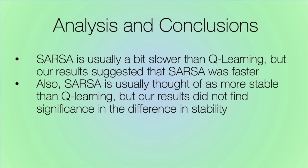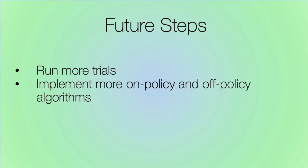It is known that Sarsa is usually a bit slower than DeepQ Learning, but our results seem to suggest that Sarsa is actually a bit faster. We believe this may be because Sarsa can more accurately estimate the actual value of the agent's actions, given that the agent would like to explore once in a while — a greedy estimation may be too optimistic. It is also usually the case that Sarsa is more stable than DeepQ Learning, but we did not find significance in our stability data. To verify this, we would need to run more trials. In the future, we would run each algorithm more times to get a bigger sample size and reduce variance, and also attempt to implement other on-policy and off-policy algorithms to further investigate differences in their performance.